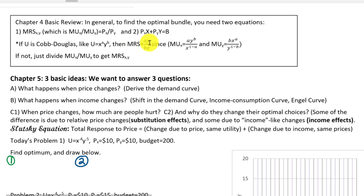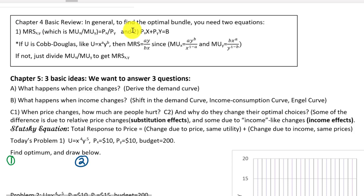If you don't have a Cobb-Douglas function, just take the partial derivatives, form the ratio, and simplify. We're solving two equations in two unknowns: first, set MRS equal to the price ratio Px/Py, since those are the slopes of indifference curves and the budget line respectively. The second equation is the budget constraint — price of x times quantity of x plus price of y times quantity of y equals total budget.